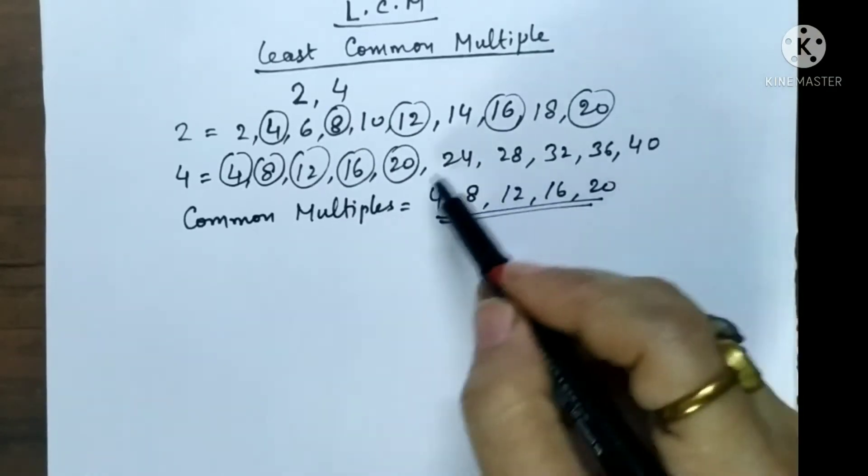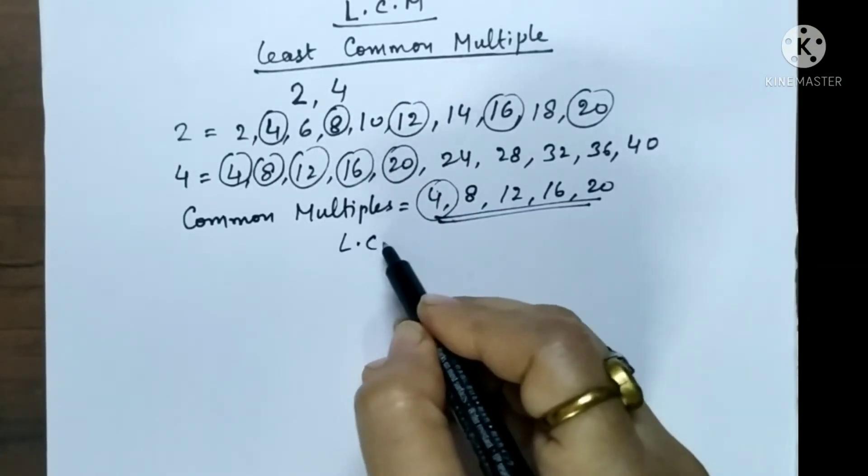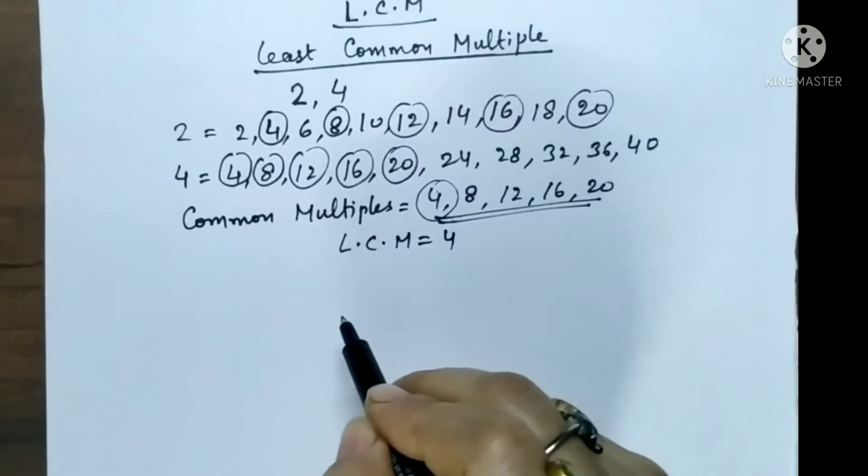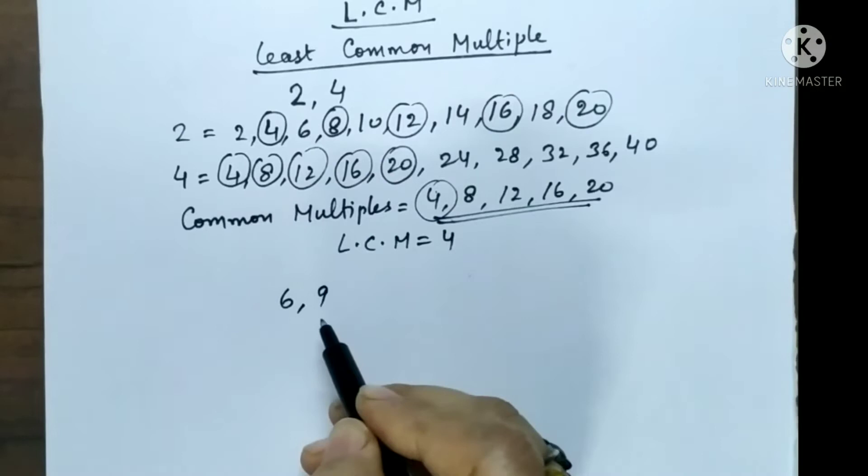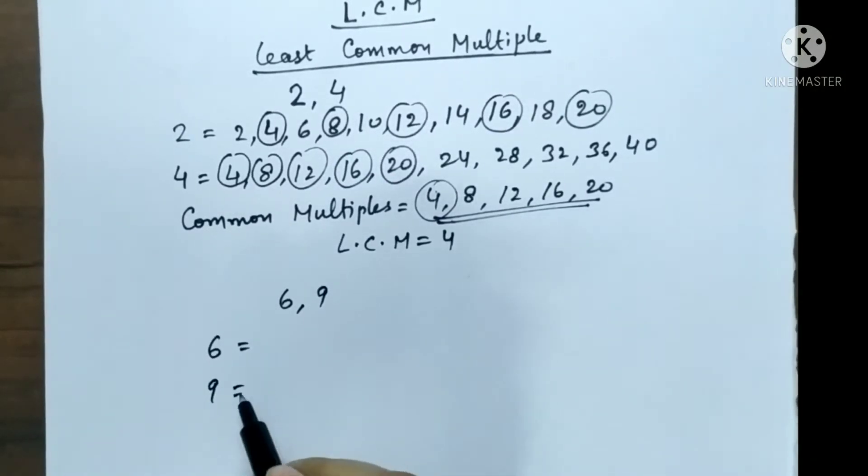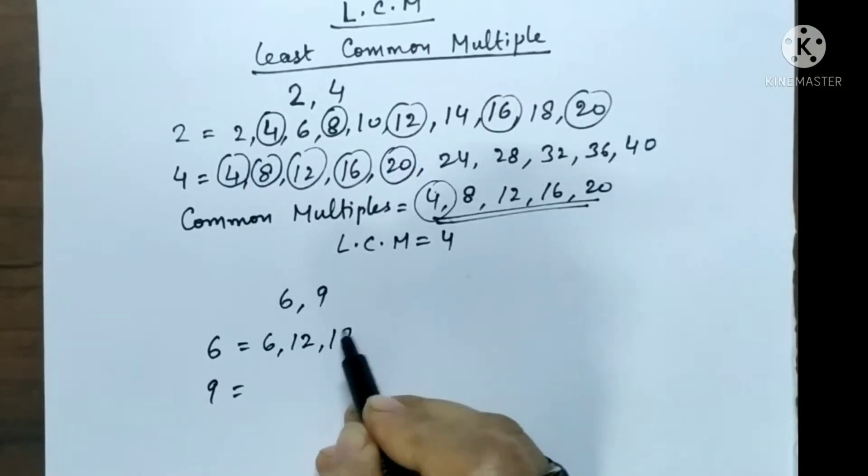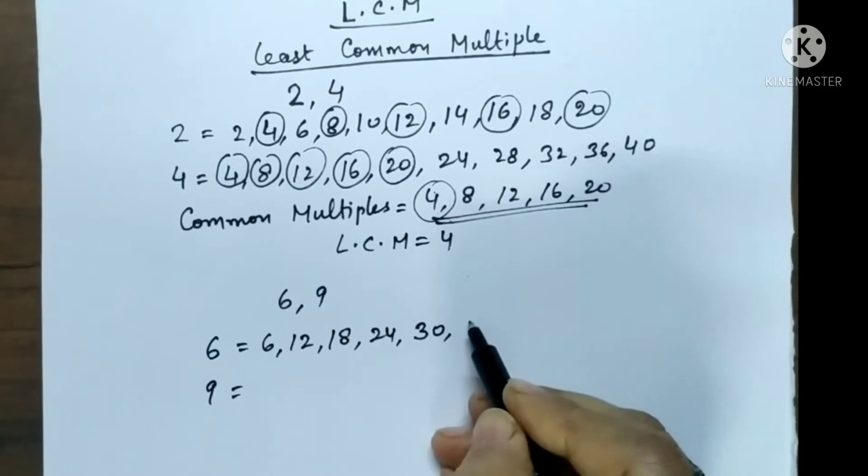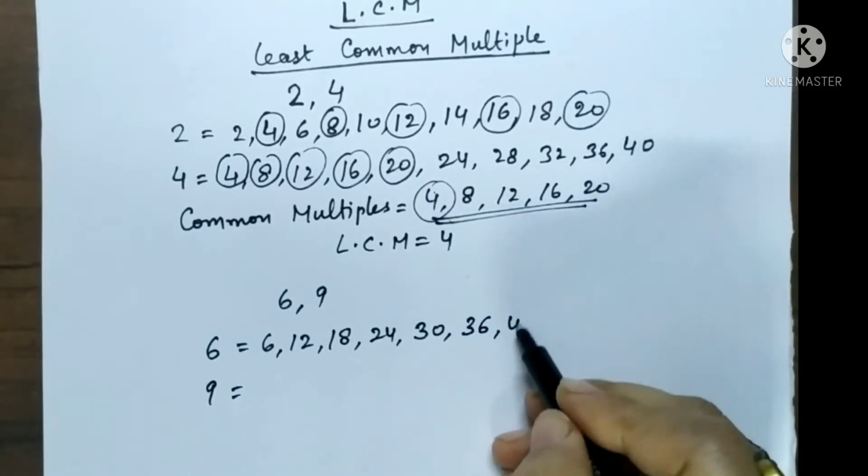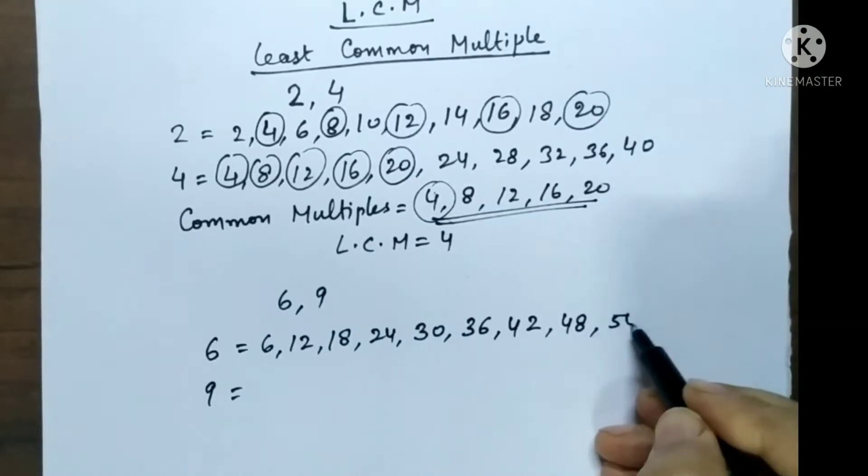Next example we can take of 6 and 9. 6 ones are 6, 6 twos are 12, 6 threes are 18, 6 fours are 24, 6 fives are 30, 6 sixes are 36, 6 sevens are 42, 6 eights are 48, 6 nines are 54 and 6 tens are 60.